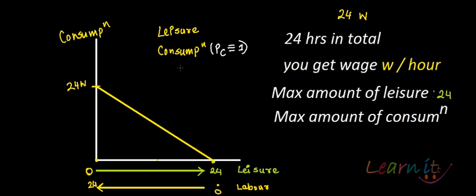What is the price of leisure? If I'm not working, I'm having leisure. But if I did not have leisure, I would have earned at least W per hour. For example, if I forgo one hour of leisure, I would have earned W dollars. In this model, your 24 hours is spent either in leisure or in labor. So if you're not consuming time in leisure, you're working and getting wage rate W per hour. Therefore, the price of leisure is the opportunity cost of not working.